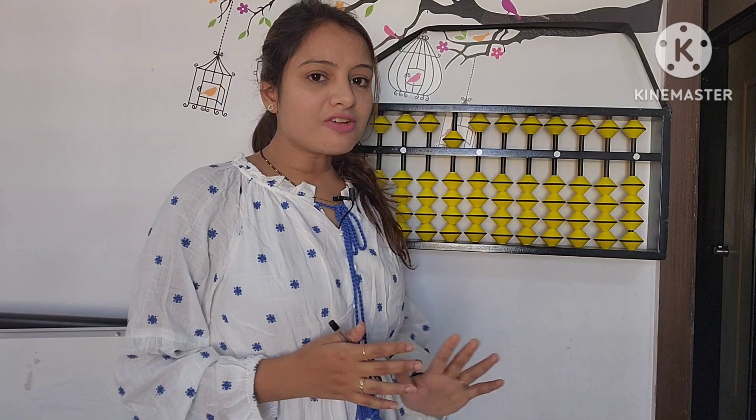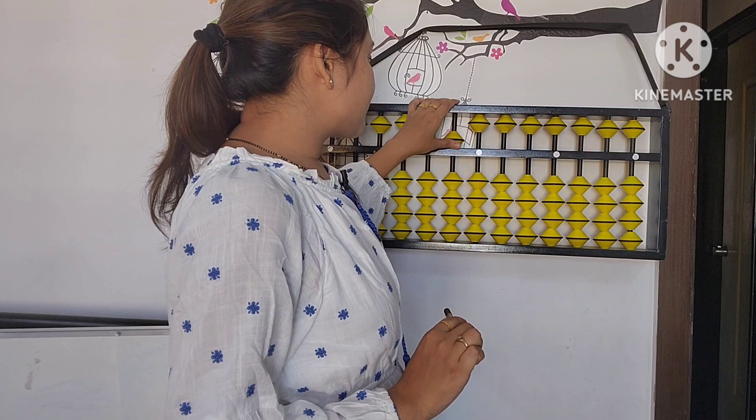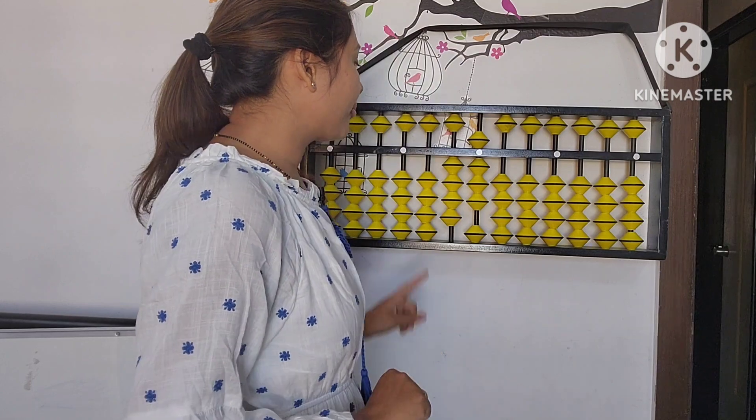If we add 2 twenty-five times, it will be 50. So let's start from 50 and subtract 2 each time. First: 50 minus 2 — less than, add 8 — the answer is 48. Again minus 2: 48 minus 2 is 46.